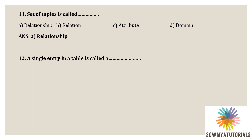Next question: a single entry in a table is called what? Options are A) record, B) relation, C) entity, D) domain. The correct answer is A — record. A single entry in a table is called a record, also known as a row or a tuple.